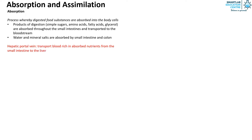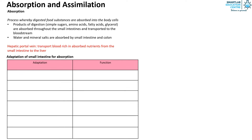Note that the hepatic portal vein transports blood rich in absorbed nutrients from the small intestine to the liver. Now let's look at the adaptations of the small intestine for absorption. The small intestine is very long and folded, and this increases the surface area to volume ratio for absorption to take place rapidly.